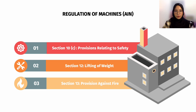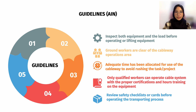The twin arm lifter and cableway system will be used to minimize the risk of accident during transportation. The last safety requirement is provisions against fire — precaution steps are taken throughout to prevent sparks and fire. There are five common safety guidelines: first, inspect both equipment and load before operating; second, ensure no workers are in the cableway operation area or beneath the load while operating; third, ensure adequate time is allocated to avoid rushing; fourth, ensure the cable system is only operated by qualified workers with proper certification and training; fifth, review the safety checklist before operating.